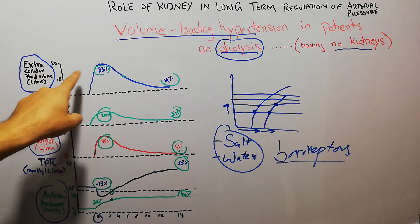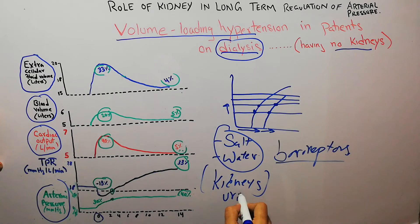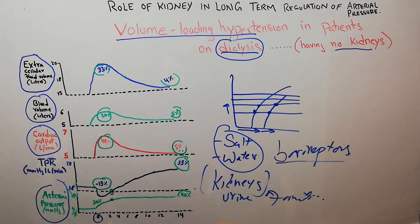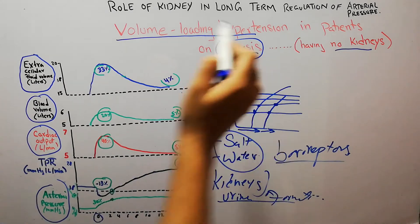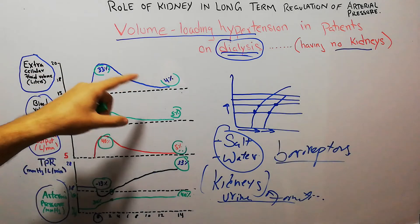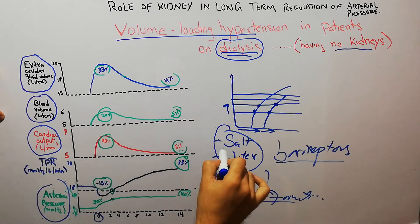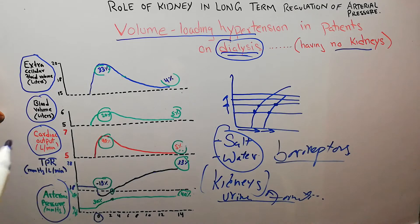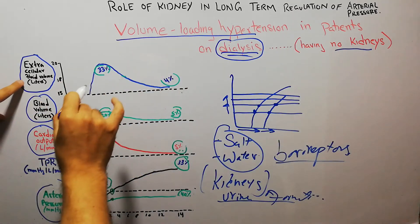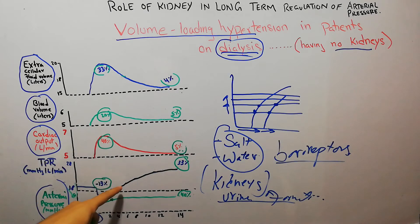With the passage of time, extracellular fluid volume and blood volume would normally decrease via urine formation. However, if the kidneys are not functional, removal of waste and excess fluid is entirely dependent on dialysis. If salt and water is allowed to accumulate, extracellular fluid volume increases, blood volume increases, cardiac output increases, and this eventually leads to an increase in total peripheral resistance.